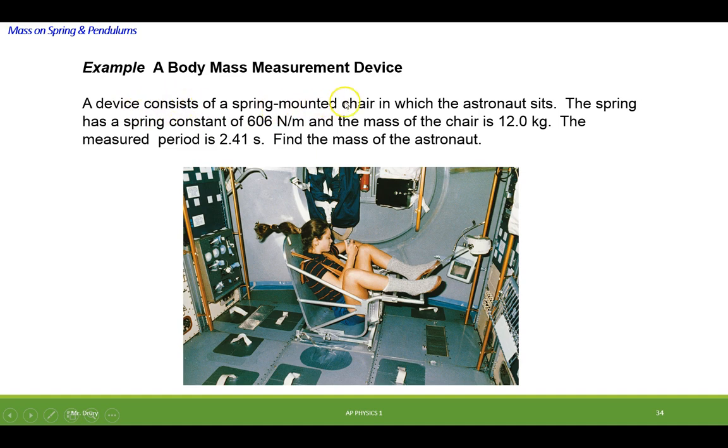The device consists of a spring-mounted chair in which the astronaut sits. The spring has a constant of 606 newtons per meter, and the chair has a mass of 12 kilograms. And when they set up going back and forth in motion, it has a period of 2.14 seconds. So the period is directly related to how much mass she has. So what I'd like to do is try to find out what the mass of the astronaut is.